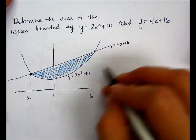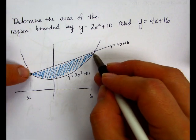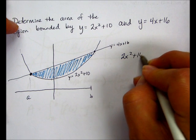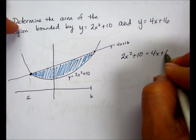So the first thing we're going to do here is we have to set these equal to one another to find these x coordinates here. So 2x squared plus 10 equals 4x plus 16.